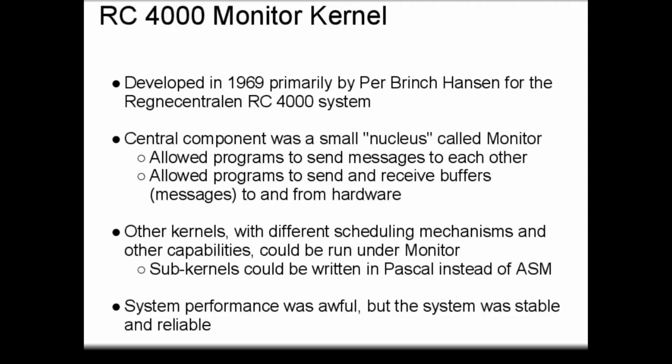An early kernel that separated mechanism and policy quite well was the Regnecentralen RC-4000 monitor kernel. This kernel was developed in 1969, primarily by Per Brinch Hansen, for the RC-4000 computer system, developed in Denmark. The central component of the system was a small nucleus, called monitor, which allowed programs to send messages to each other and allowed programs to send and receive buffers — essentially types of messages for hardware — to and from different hardware devices, including a card reader, a tape reader, and a printing-style output device.